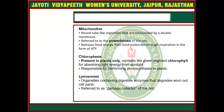The next organelle is mitochondria, known as the powerhouse of the cell. It is surrounded by a double membrane. Mitochondria has an important role in the respiration of the cell, in various types of metabolic cycling, and in oxidation. It generates ATP through the process of respiration, which is why it is known as the powerhouse of the cell.